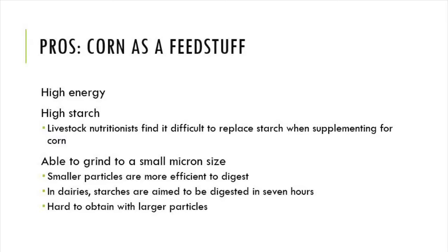Corn is also able to be ground down to a small micron size. Micron size is important when grinding due to the fact that increasing the surface area of feed does increase digestibility. This is really important in industries such as dairy where the commodity is derived several times a day rather than just at a terminal end.